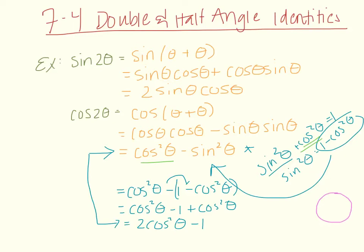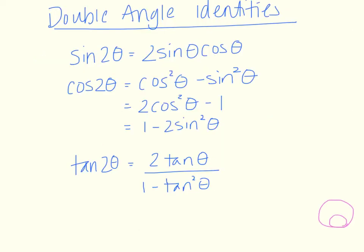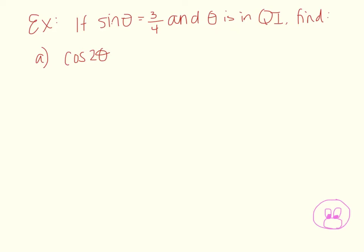Similarly, we can do the same thing for tangent and end up with a double angle formula for tangent as well. Here are our three double angle identities: sine of two theta equals two sine theta cosine theta. For cosine of two theta we have three identities — we use the first if we know both sine and cosine, the second if we only know cosine, and the third if we only know sine. Tangent of two theta equals two tangent theta over one minus tangent squared theta, which you can derive using the sum formula for tangent.